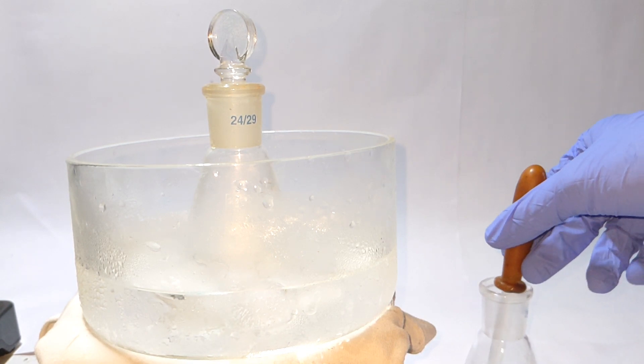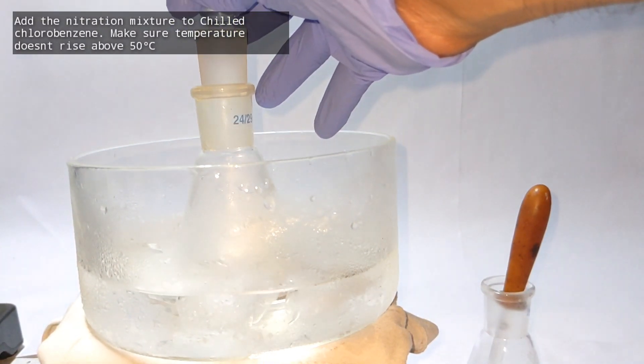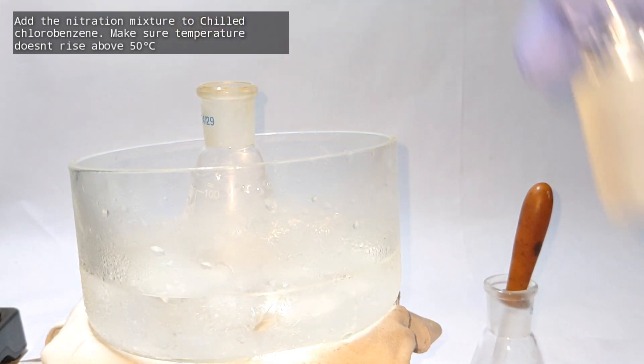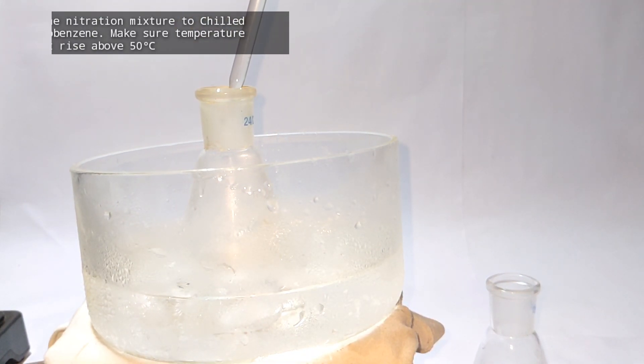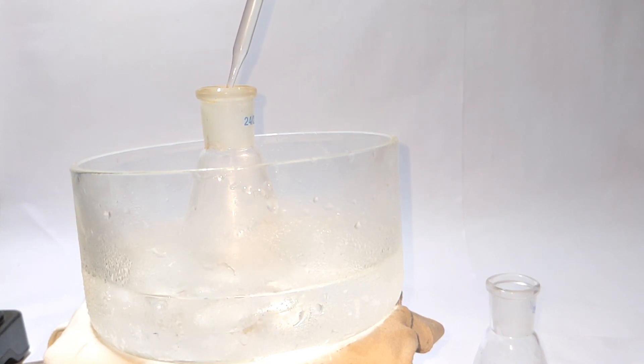Here we have the chlorobenzene and now we add the nitrating mixture using a dropper. Care should be taken not to let the temperature go above 50 degrees Celsius. So slowly add the acid mixture dropwise with continuous stirring.